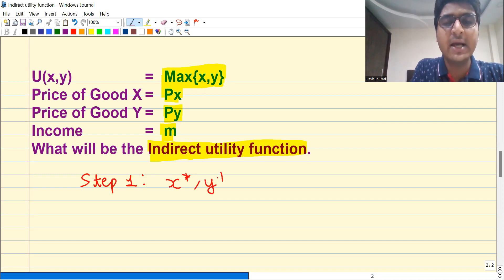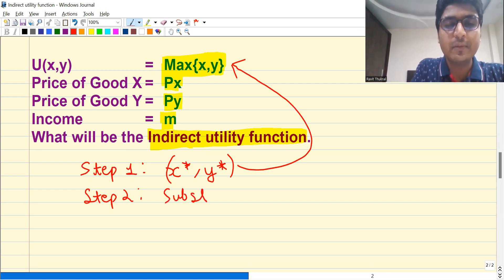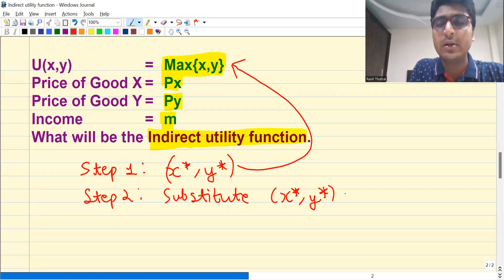That will give you the optimal choice in this case. And then step number two is that you need to put these optimal choices back into the utility function. So substitute X star and Y star back into the utility function.